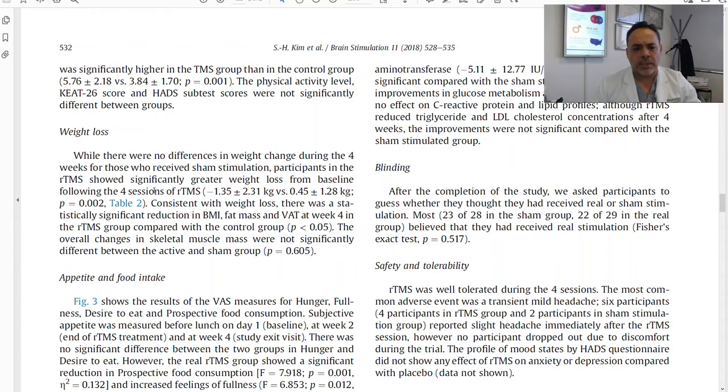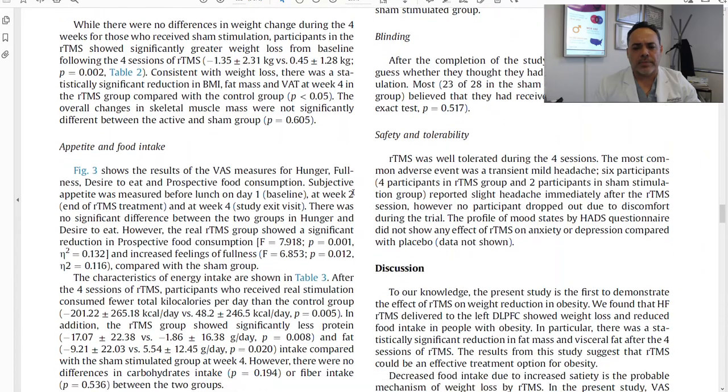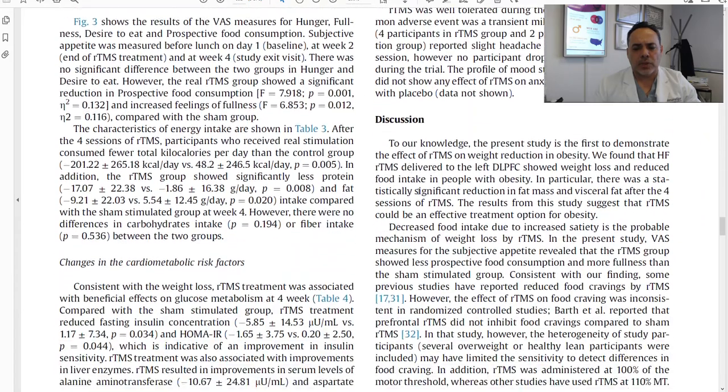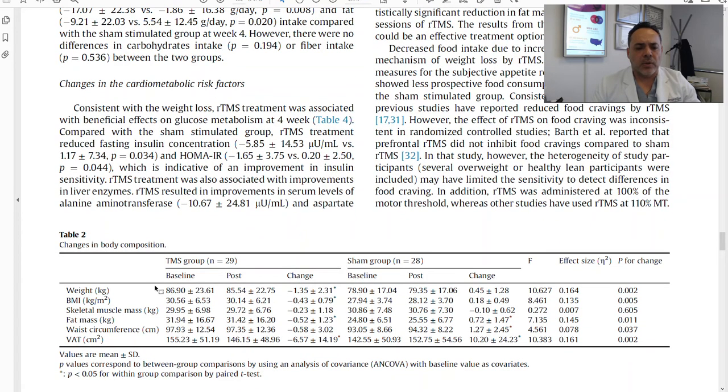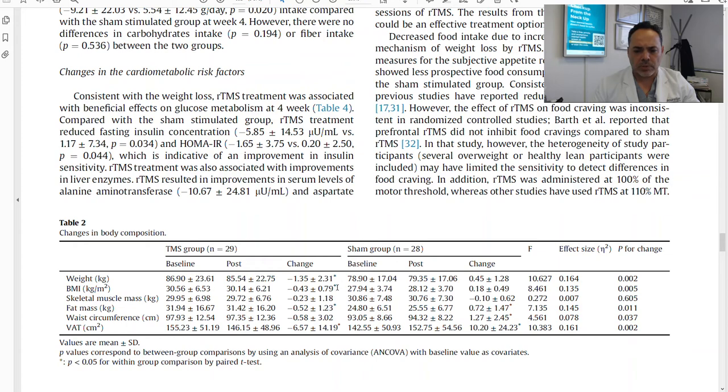That's basically less than four weeks of weight loss. And what's more is that when they measured the caloric intake, there was a significant change. So in terms of the weight, the average went from 86.9 kilograms to 85.5, a change of 1.35 plus or minus 2.31 kilograms, that again translates to approximately four or five pounds.